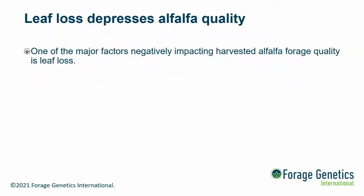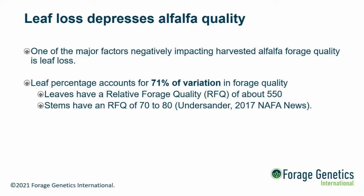Everybody knows that leaves are a major factor affecting the quality of alfalfa. Dr. Undersander at the University of Wisconsin has studied this extensively and reported that leaf percentage can account for 71% of the variation in the quality of alfalfa. The major reason is the huge difference in relative forage quality, or RFQ, between leaves and stems — the RFQ value of leaves is probably five to six times greater than for stems.